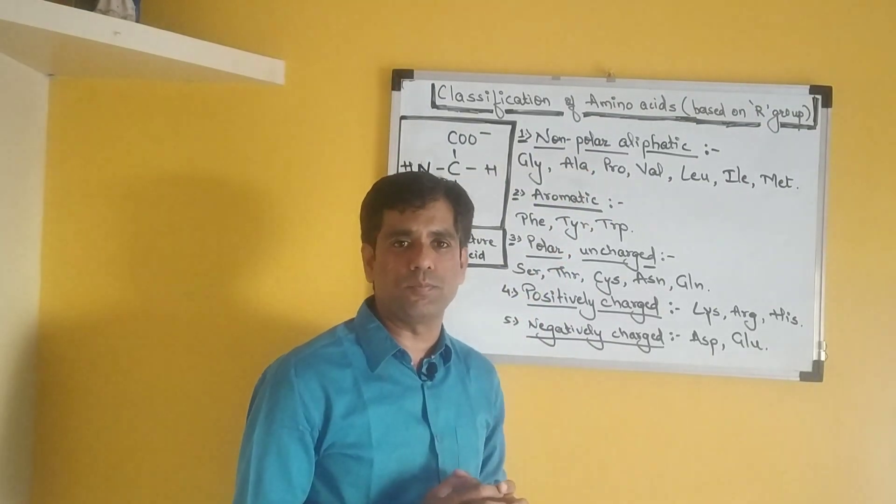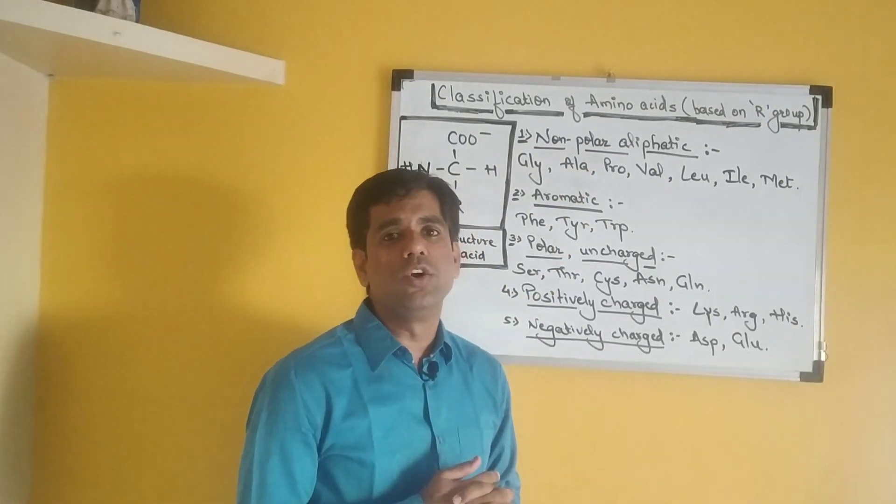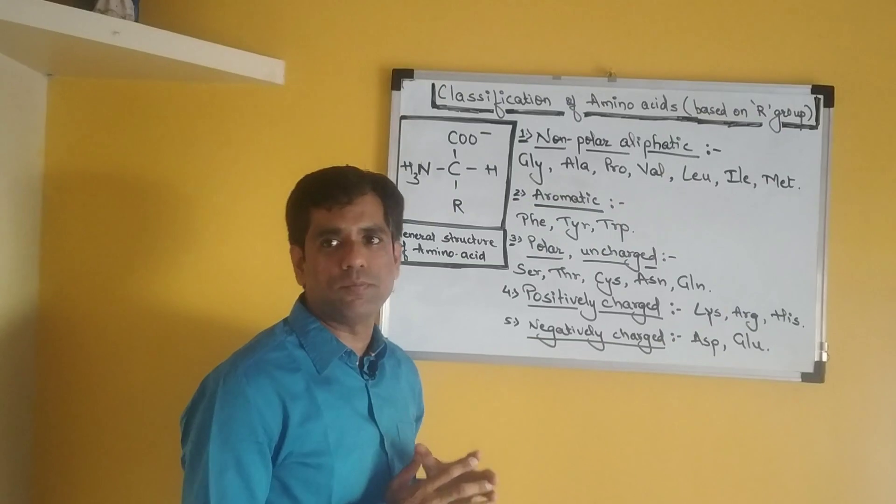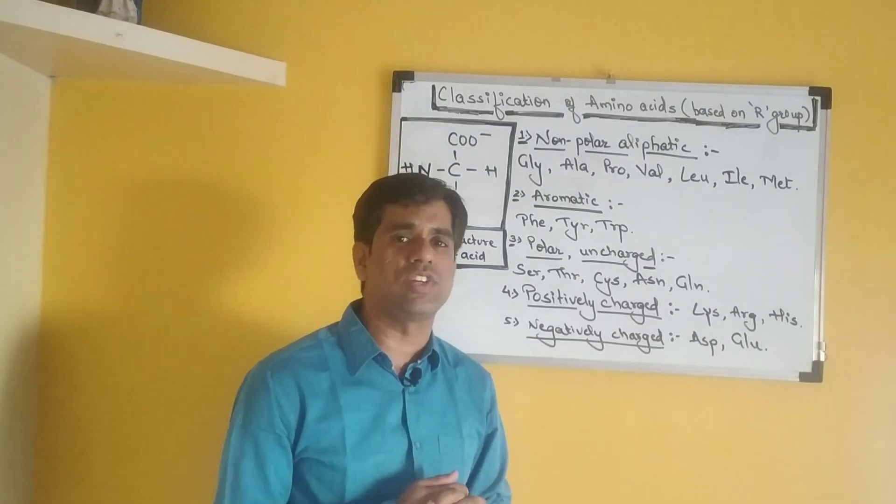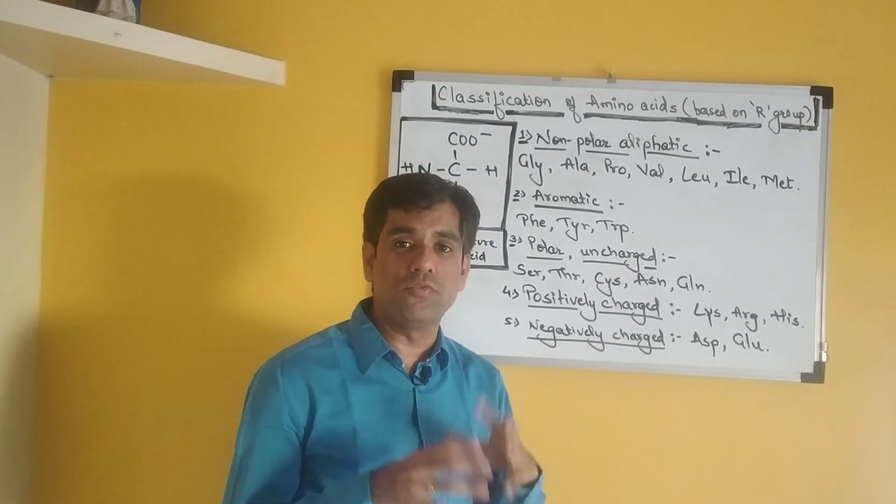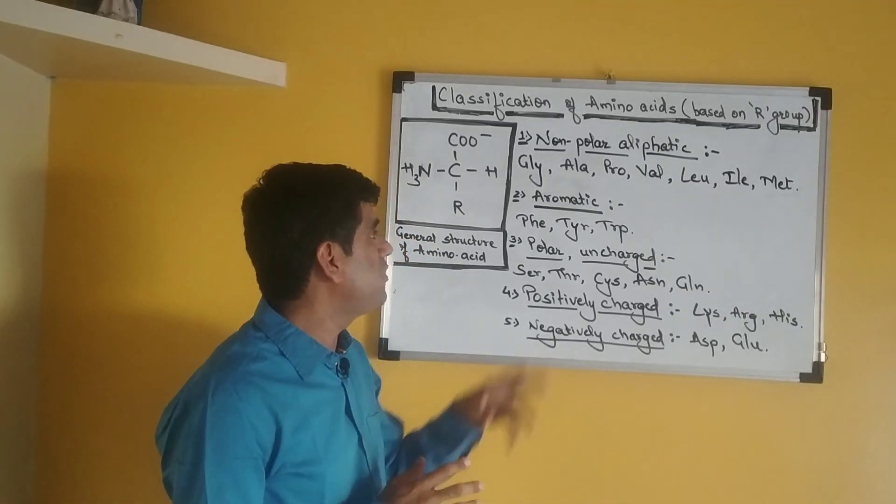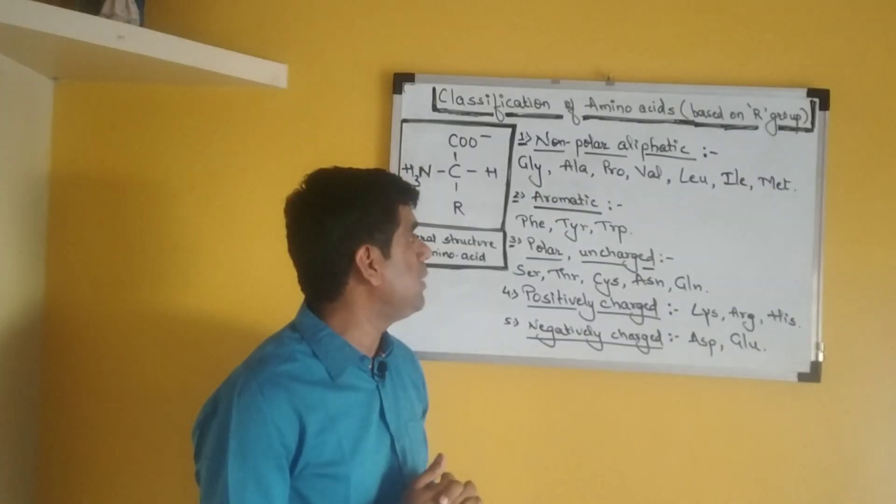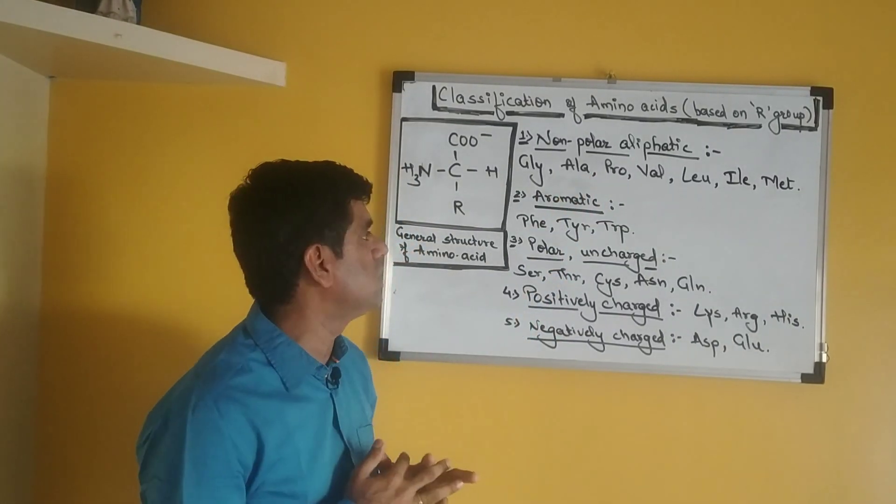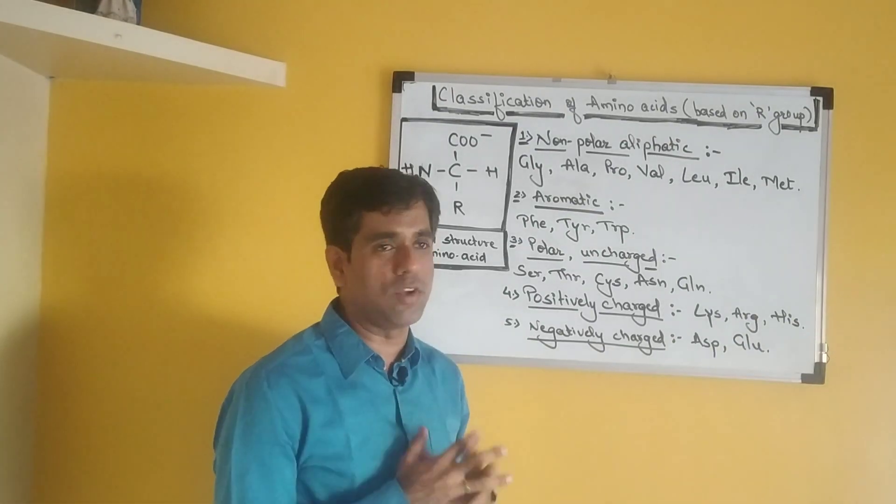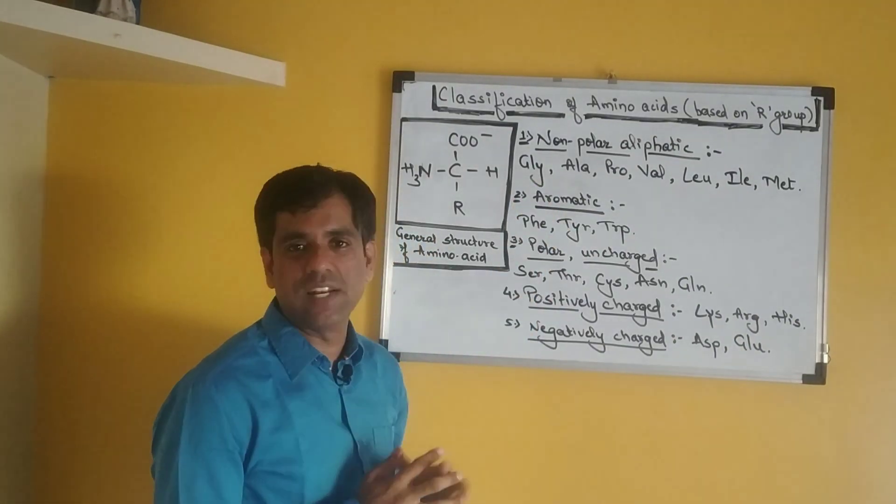Proline is more famous because it provides less flexibility to the polypeptide chain where it exists because its aliphatic R group is actually folded in a cyclical form where it forms a secondary amino group in that cyclic structure, which reduces the flexibility of the polypeptide chain where proline is present.